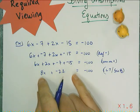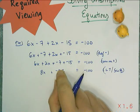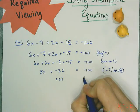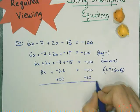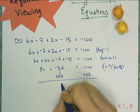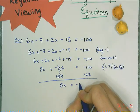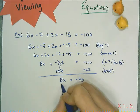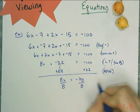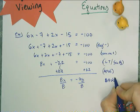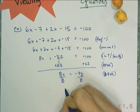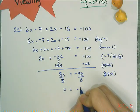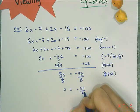Now I have a two-step equation: 8x and I'm adding negative 22. I want to add 22 to both sides strategically so those cancel, leaving 8x equals negative 78. Then I divide both sides by 8.